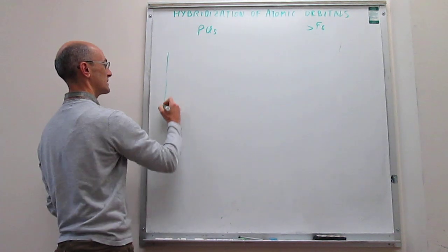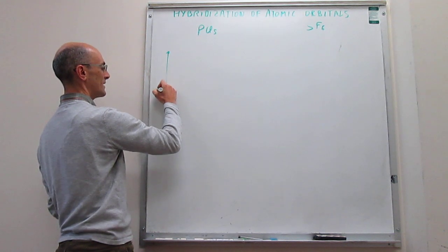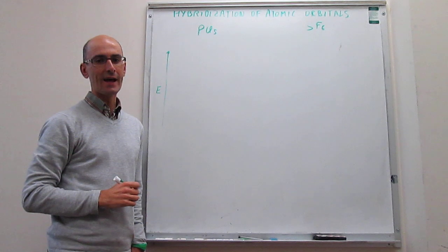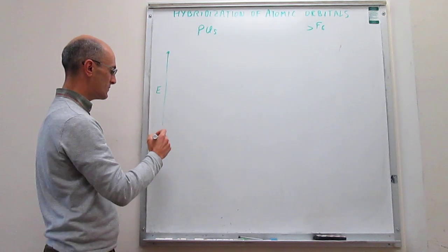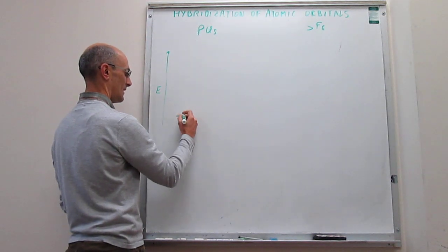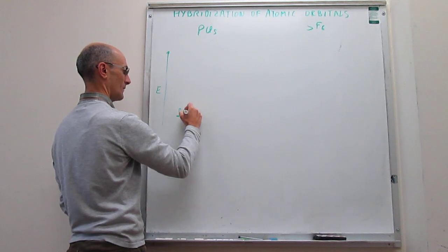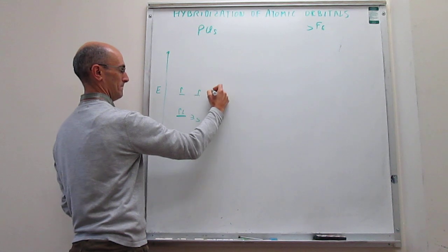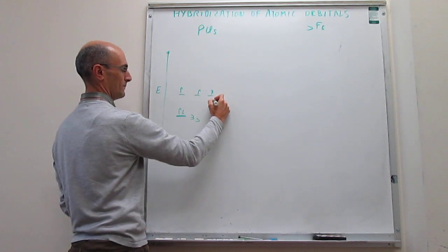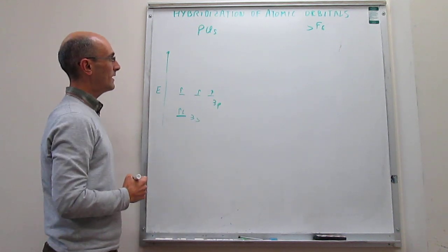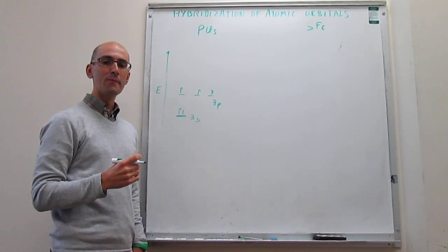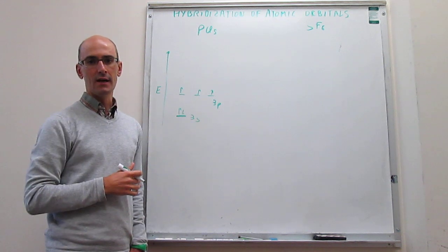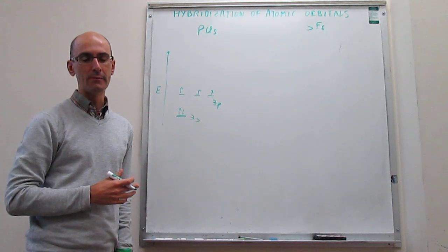The way to think about this is, as before, consider an energy diagram for the atom whose orbitals are undergoing hybridization. Phosphorus in the valence has a 3s2 and then 3p3 electronic configuration. Our goal here is to form five orbitals that are identical, distributed along the directions of a trigonal bipyramid.